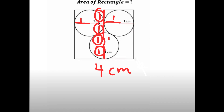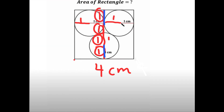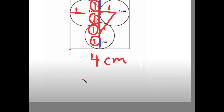Now from here, I'm going to change my color to blue for the ends and red for the middle. This actually forms a triangle. We know that the length from the center over here to the center of this circle is one centimeter, and we also know that one squared plus x squared is equal to four, because the total of this side is four.